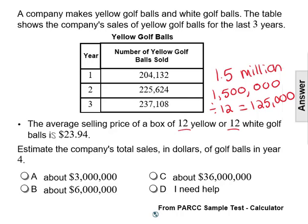So we are estimating that in year four, the company is going to sell 125,000 boxes. We're also told that the price is $23.94. We can round that to $24 since we're estimating. So then we can multiply that total amount of boxes, 125,000, by $24 to get our answer.